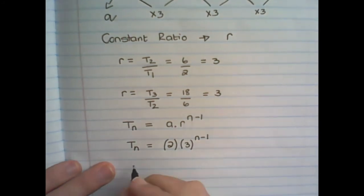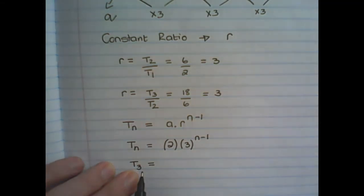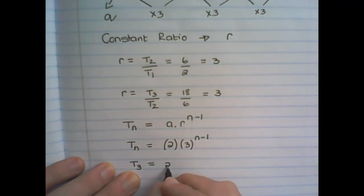And you can always test your formula. For example, let us see if we can find the third term using this general formula. If we are correct, our third term's value is supposed to be 18. So it's 2, multiply with 3, to the power of 3 minus 1.